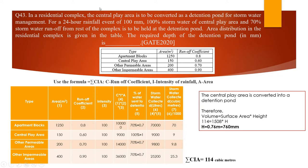We need to find the height of the water level. The central play area is converted into the detention pond, so the total surface area of the central play area is used. Recall the formula: Volume = Surface Area × Height. We know the volume is 114 cubic meters and the surface area is 150 square meters. Solving for H: 114 = 150 × H, giving H = 0.76 meters.